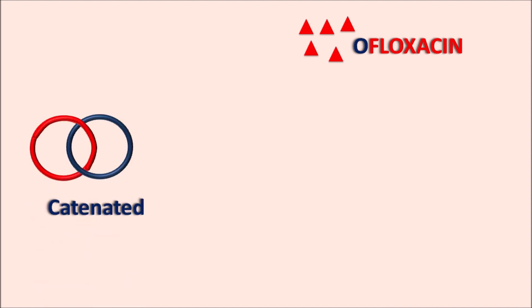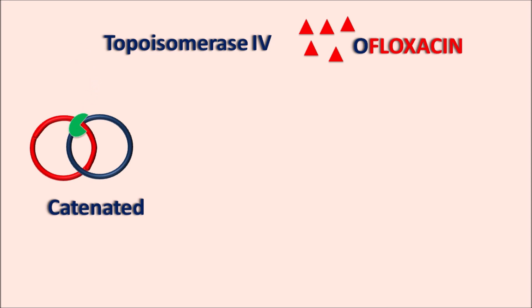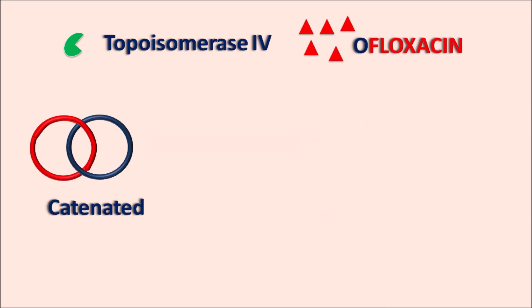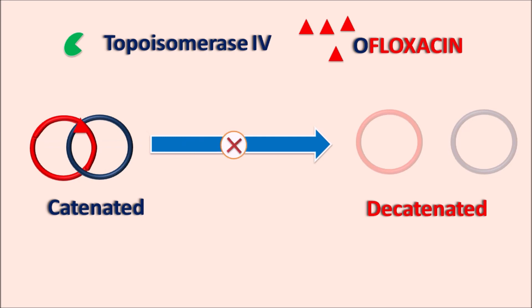Similarly, ofloxacin also acts on topoisomerase 4. During DNA replication, DNA exists in a catenated form. Topoisomerase 4 cuts open and relieves the strain to convert catenated DNA into decatenated DNA. Ofloxacin binds to the catenated DNA, preventing topoisomerase 4 from acting on it, so decatenated DNA cannot be produced. By inhibiting both topoisomerase 2 and topoisomerase 4, ofloxacin inhibits DNA synthesis and thereby produces antibacterial activity.